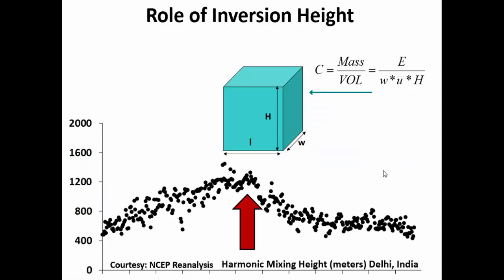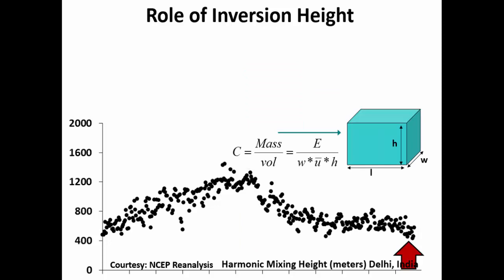Let us look at Delhi's inversion heights. This is an average taken from NSEP reanalysis data fields. In winter time, you see very low mixing heights. These are daily average mixing heights, so within the day, nighttime values are going to be even lower compared to daytime. On average, your wintertime mixing heights are lower and summertime mixing heights are higher. Going back to the box model: if we have the same mass and your volume is defined by height H, your summertime heights are higher, which means lower concentrations. In wintertime, heights are really low, air is getting compressed a lot more, and lower volume means higher concentrations.